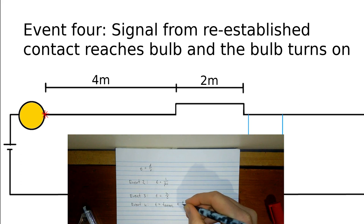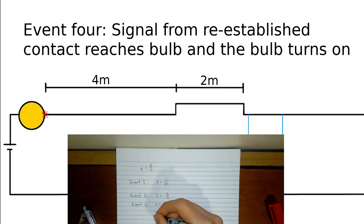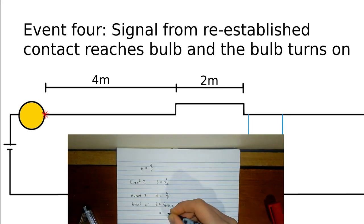Event 4 depends on the propagation time and when event 2 occurs. When event 2 occurs, the signal is sent and it must then propagate 6 meters. So, the time stamp for event 4 is t equals 1 divided by beta c plus 6 divided by c, or approximately 1.4 times 10 to the negative 8 seconds.